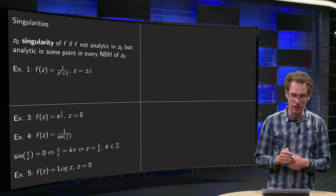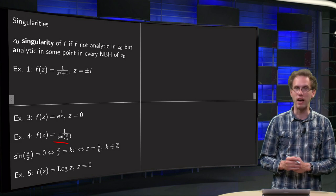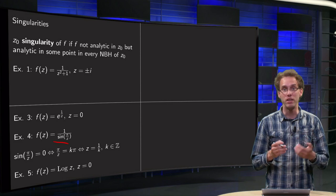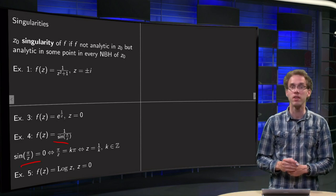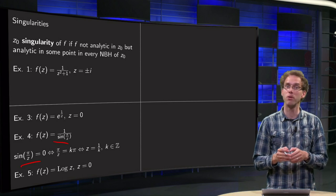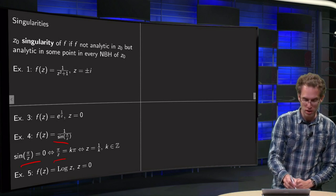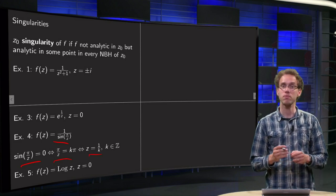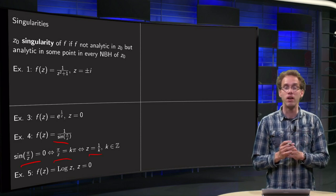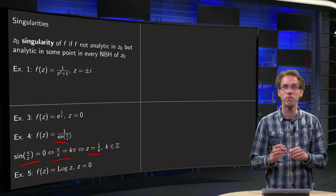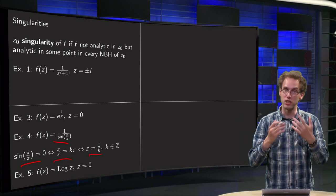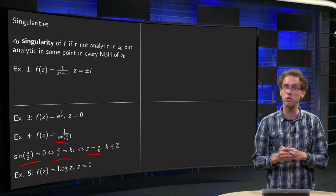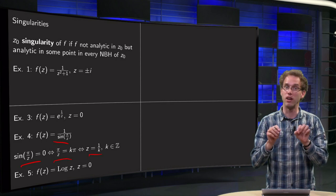Then we take a look at a bit more tricky example: 1 over sin of π z. Well, the problems are, of course, again, when you are dividing by 0, so sin of π over z equals 0, and that's the case when sin of something equals 0, if something equals a multiple of π, so if π over z equals k π, so if z is 1 over k, where k is in Z. So this function has many singular points, they are all on the real axis, so they are singularities, because in the imaginary plane you have plenty of analytic points in the neighborhoods, so there are singular points, and they are infinitely many.